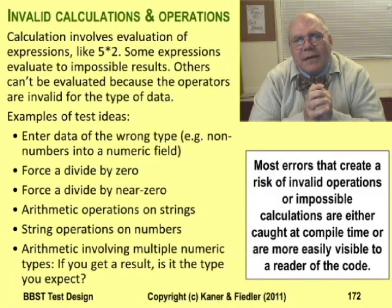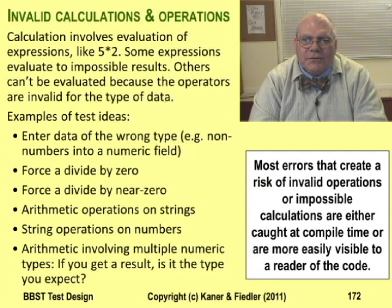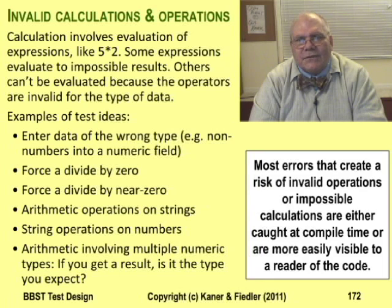Calculations fail for many reasons. The quick tests check for simple routine bugs that programmers accidentally allow in their calculations. Getting to these early in testing can prevent a lot of bugs. Suppose a programmer is sloppy about guarding for divide by zero — if you start finding divide by zeros when the program is 20% complete, you give the programmer the opportunity to improve how he writes the next 80% of the code.